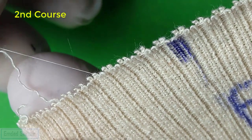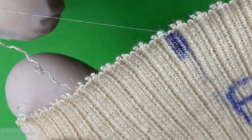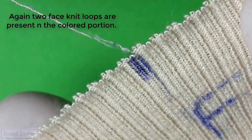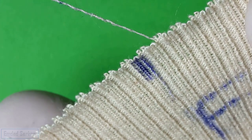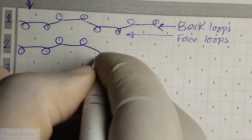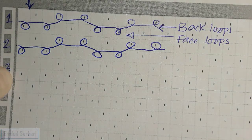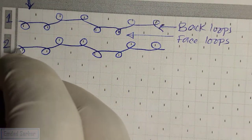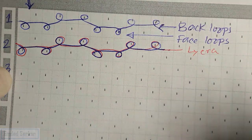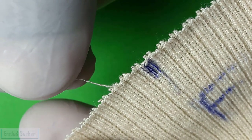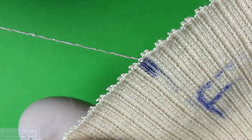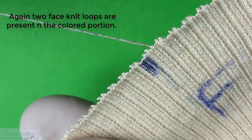In the case of the second course, one lycra yarn and one cotton yarn is coming out — lycra yarn is more elastic. In the colored portion, again two face loops and then two back loops. So in the case of the second course: two face loops, two back loops, two face loops, again two back loops. For lycra yarn I am using red color. In the case of the third course, in the colored portion, again two knit loops and then two back loops. This course contains no lycra yarn.